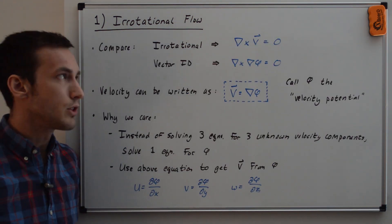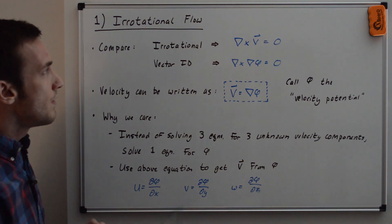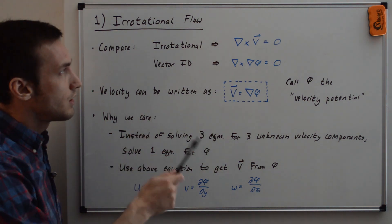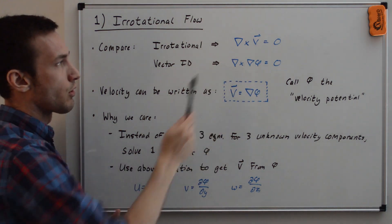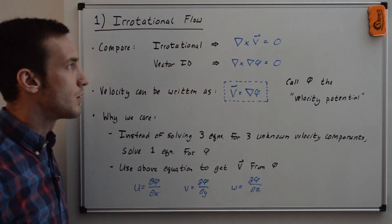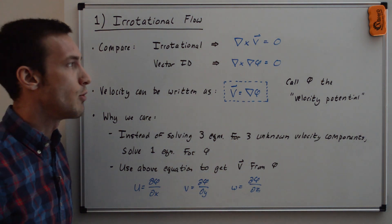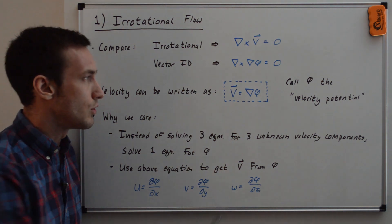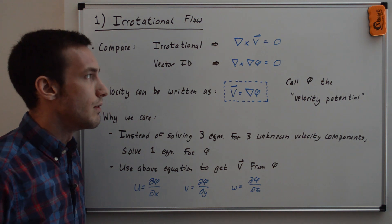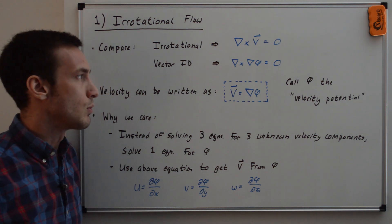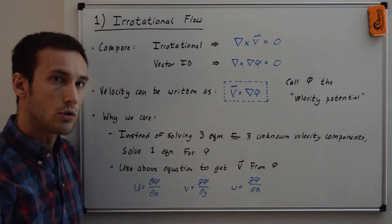Comparing the irrotational condition to the vector identity: the irrotational condition was del cross v equals zero, and the vector identity was del cross del phi equals zero. From these two equations we can see that the velocity can be written as v equals del phi, or the gradient of phi — some scalar field. We call phi the velocity potential.